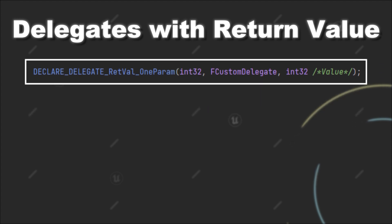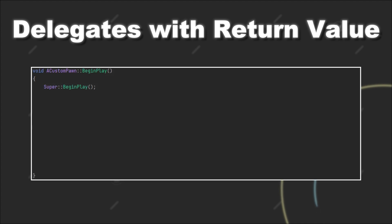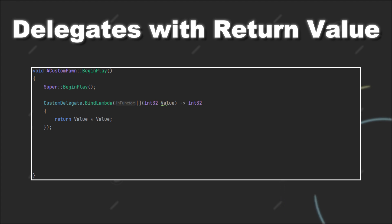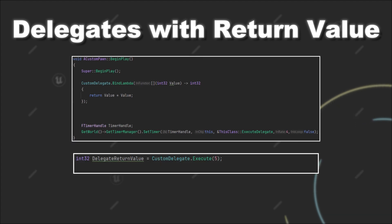With that done, we can declare an instance of our delegate like this. Next we can bind the function to the delegate, for example using the BindLambda function. Then we have to add the lambda expression, which in our case basically multiplies the input value by itself. Now we can also create a timer and call a function inside of that that will execute our delegate. In our case we have to provide an input value, and then we can store the return value in its own variable.